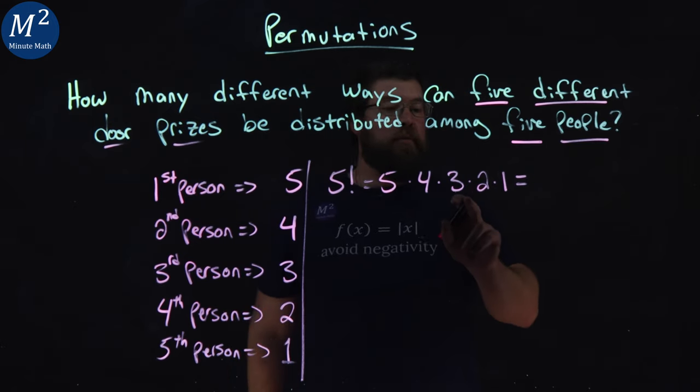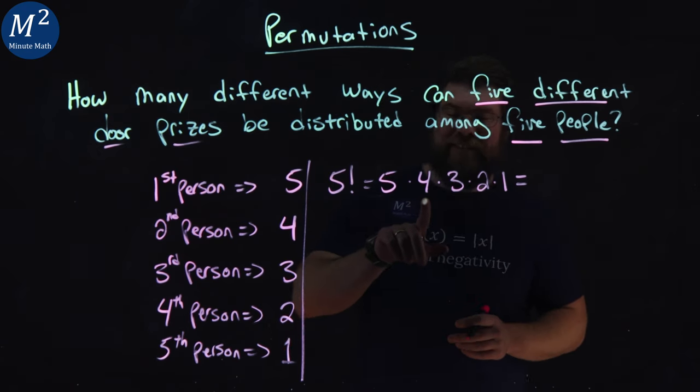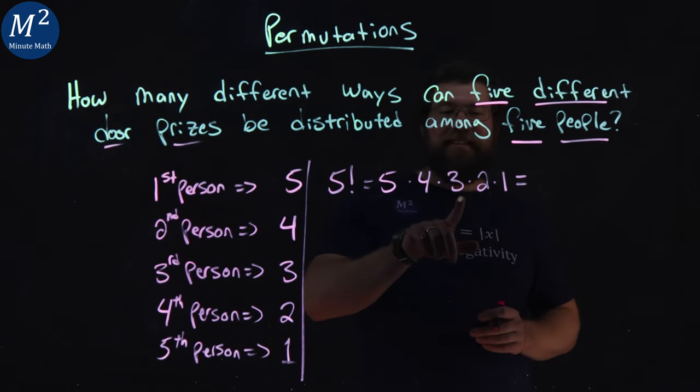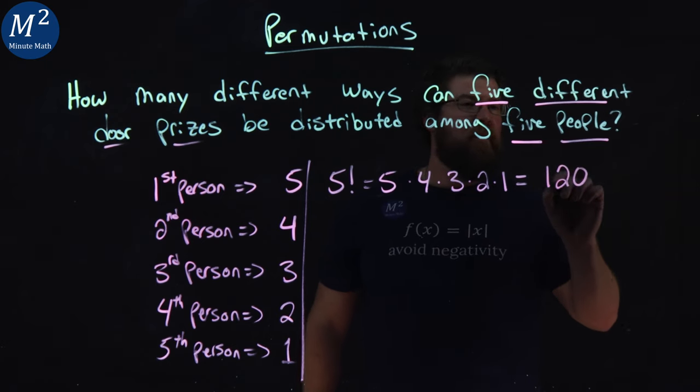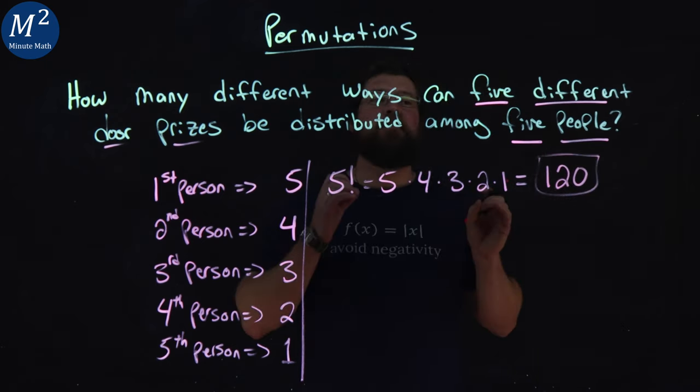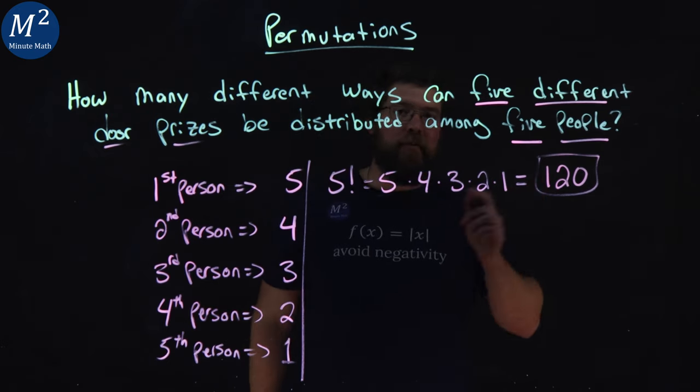So five times four times three times two times one comes out to be, well, five times four is twenty, times three is sixty, times two is one twenty, times one is one twenty. So there's 120 different ways that five door prizes can be distributed amongst five people.